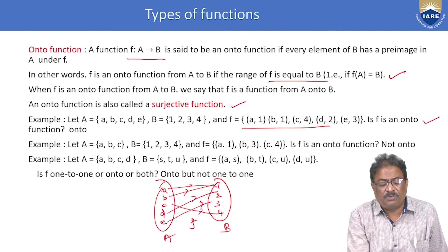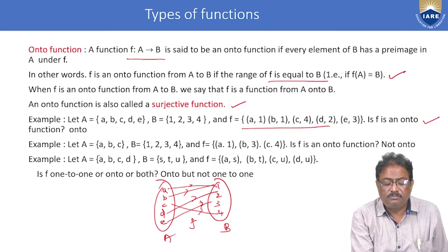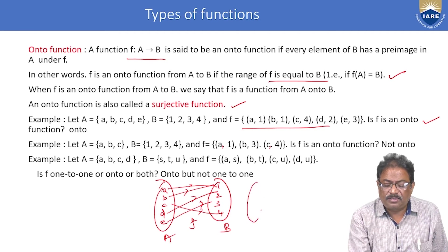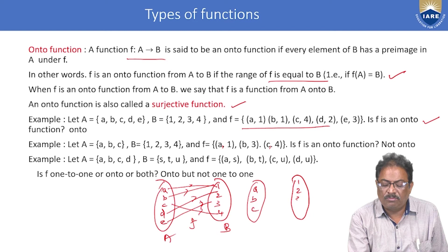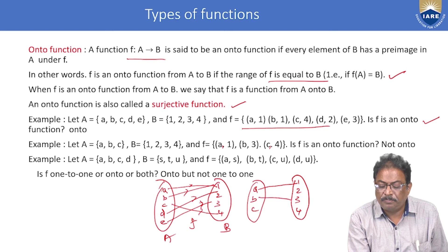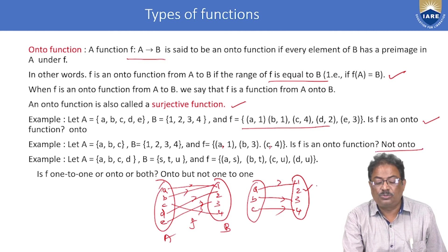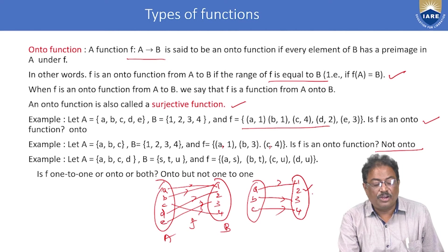Verification example 2: A = {a, b, c} and B = {1, 2, 3, 4}. The mapping is: a→1, b→3, c→4. Here, element 2 does not have any preimage. Since at least one element of B lacks a preimage, this is not onto — it is an into function.